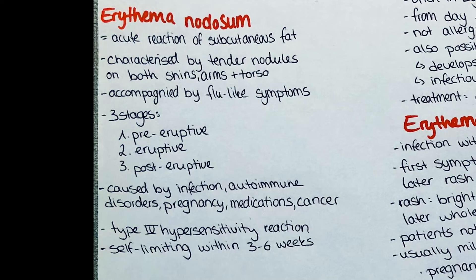The nodule undergoes a development from first being red, tender and hot to progressively becoming softer and smaller until it eventually disappears after approximately two weeks. Newer nodules will appear for a time of six to eight weeks. Usually no scar is observed after the nodule disappears. The post-eruptive stage is the completion of the healing process, though it is not differentiated from the eruptive stage in all textbooks.